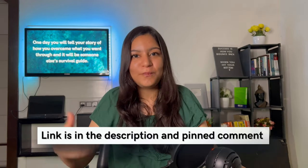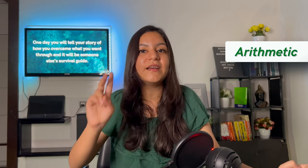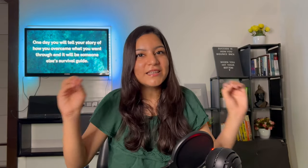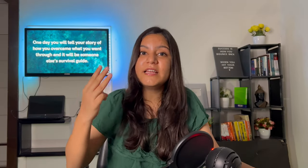This link will be in the description and pinned comment. As I have shown you the trend analysis in this book, there are three topics which can help you ensure 80 percent in the Quant section. Those three topics are Arithmetic, Algebra, and Geometry. If you take a paper from any single year, you would realize that the total number of questions from these three topics was more than 80 percent in every single slot. Which means if you prepare these three topics very well, there is a very good chance that you don't need to focus on the rest of the topics.